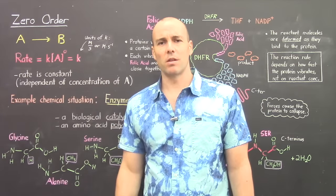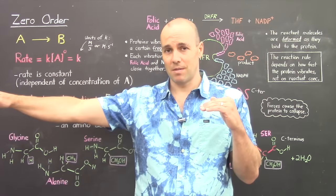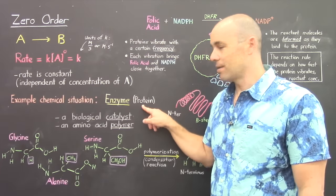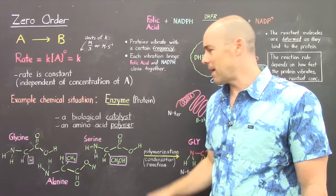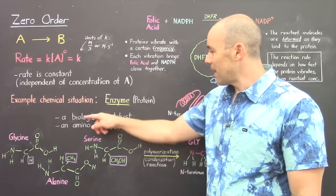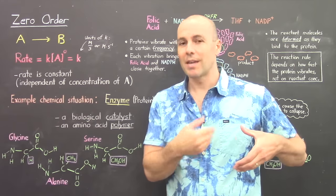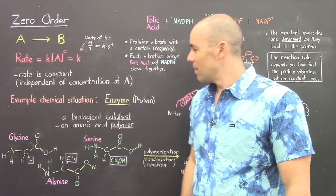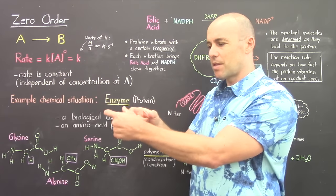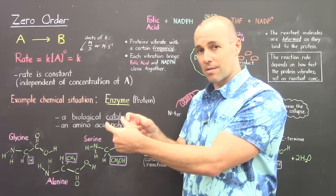A popular example of zero order kinetics is that of an enzyme, or protein — a biological catalyst that speeds up a chemical reaction without being used up. Every cell has lots of different proteins, and each protein catalyzes a specific reaction. What a protein actually is, is an amino acid polymer — a long chain of amino acid molecules attached together through covalent bonds.